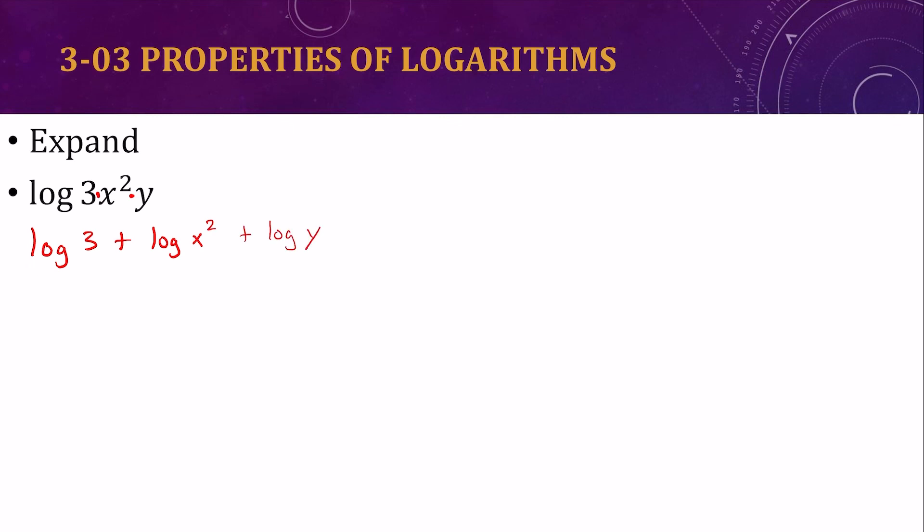So log of 3 plus log of 2 plus log of y. Now there's no base. Do you remember what the base is? That's right, it's base 10. Oh, we're not quite done because we have this exponent. The exponent can go in front of its logarithm. So I'll have log base 3 plus 2 times log base x plus log base y.